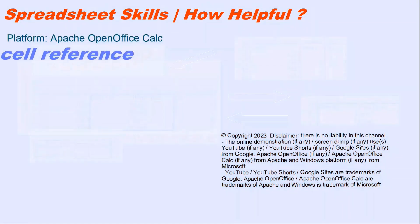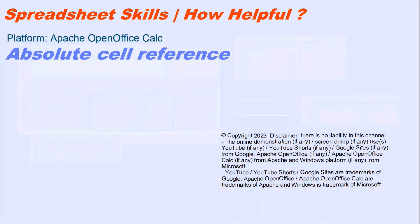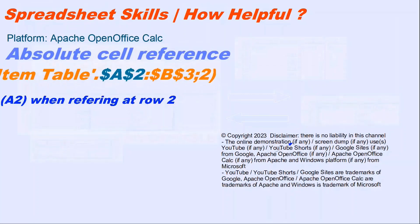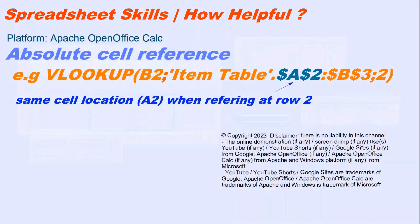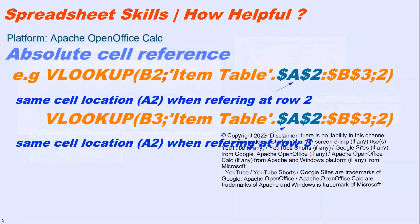Absolute Cell Reference: the cell reference will not be changed relative to the different current reference. For example, it is A2 when it is at row 2, and it is also A2 when it is at row 3.